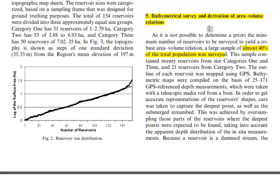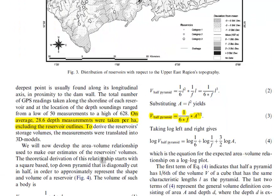The survey involved rowing around each reservoir in a small inflatable boat, taking GPS points and measuring depth at those points with a measuring rod, while also walking the edge of land and water to record an exact outline. On average, the density of measurement points was relatively high — about 28.6 depth measurements per hectare — which allowed the authors to build a detailed 3D bathymetric model of each reservoir.